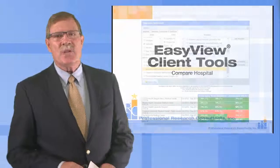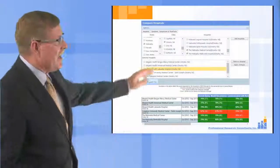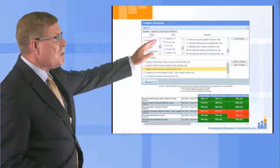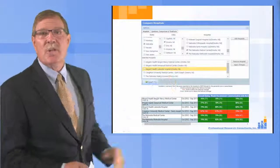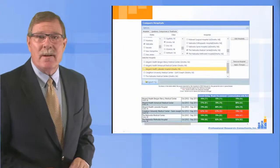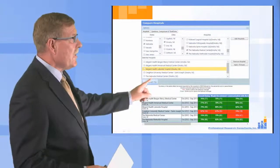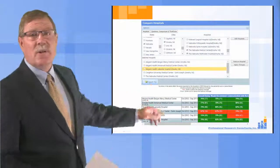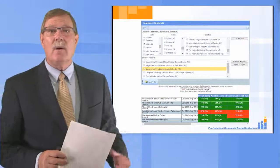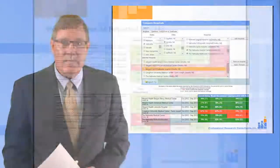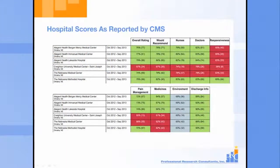Simply choose the state and city, then choose the hospitals with which you want to be compared. And once you've made this selection, you can even export it to Excel or Adobe. On one page, you can see how all the selected hospitals are doing on the various value-based purchasing dimensions.